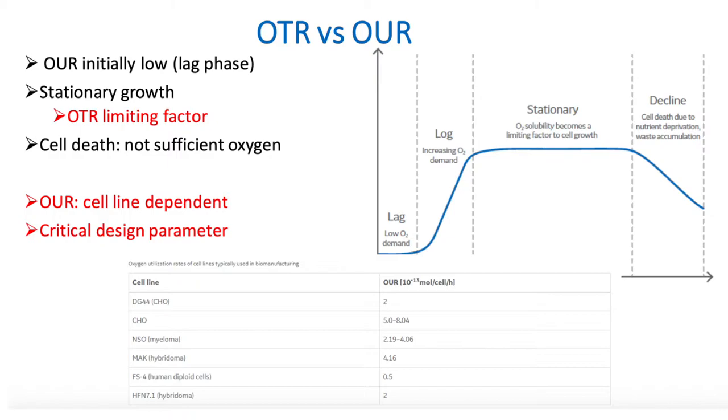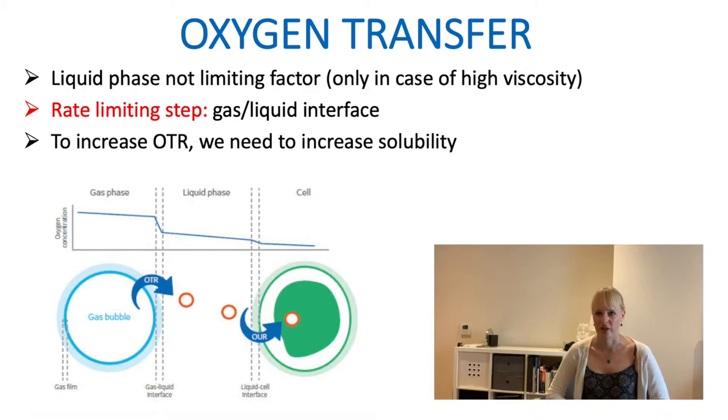The oxygen uptake rate, or OUR, is a critical design parameter. What you will need to do is look at the cells, and based on what culture you're working with, you would design your reactor accordingly by the oxygen uptake rate within the reactor.